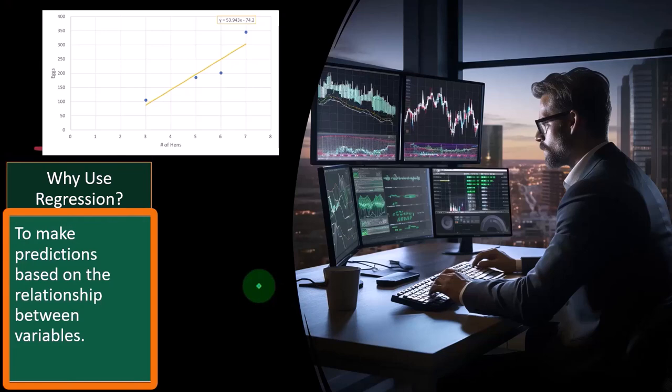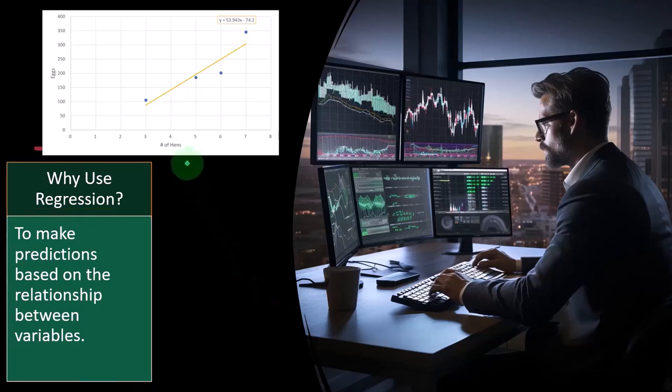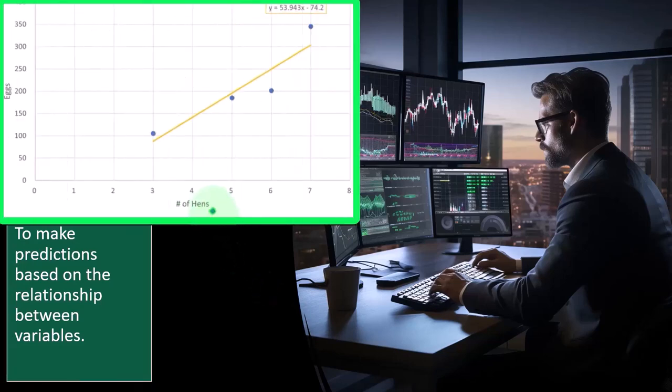So why use regression? To make predictions based on the relationship between variables. So again, with the hens and the eggs, why do I do the regression? Well, if I just have these dots of data points, I'm not going to be able to answer a question like how many hens do I need to buy in order to produce so many eggs that I'm going to sell in the future. But if I can get this line, if I can draw a trend line, then I can make a general prediction, right?